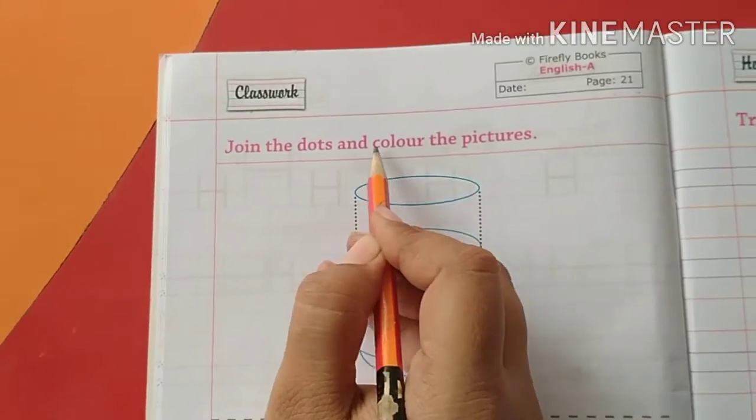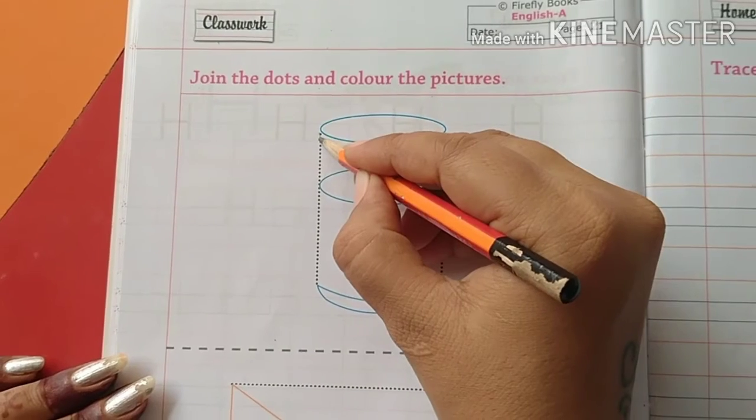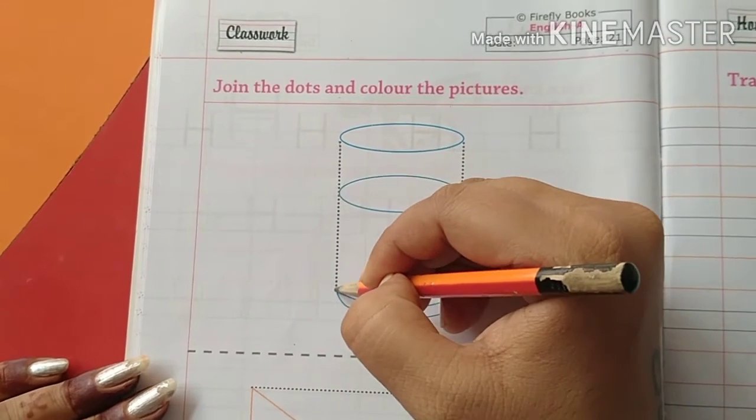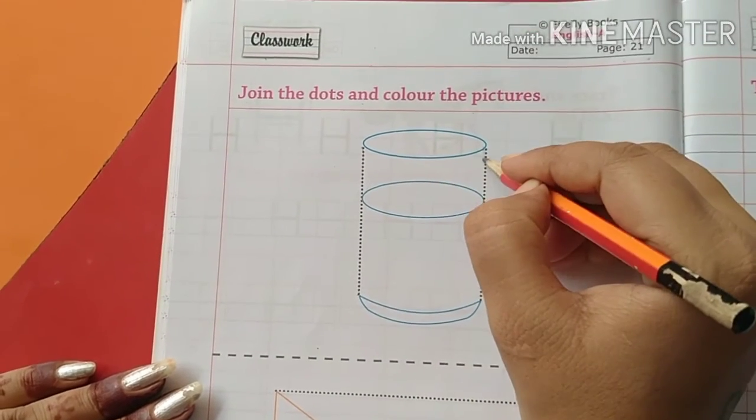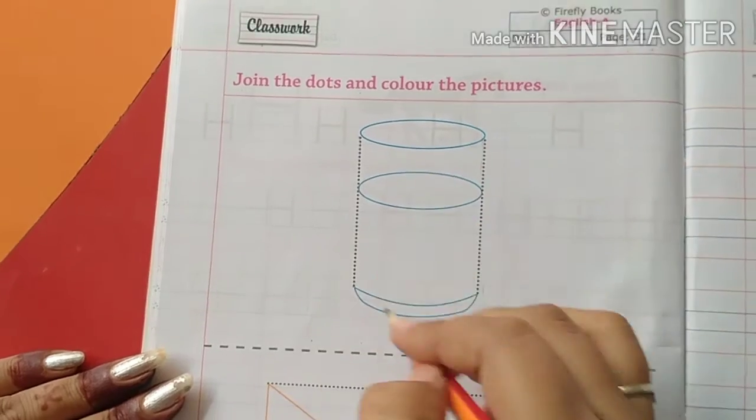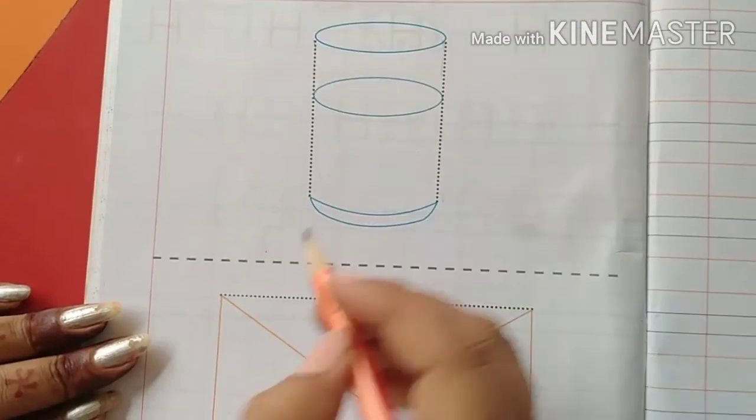Join the dots and color the picture. Here you can join the dots and color the picture. You can join the dots on both sides. And second picture.